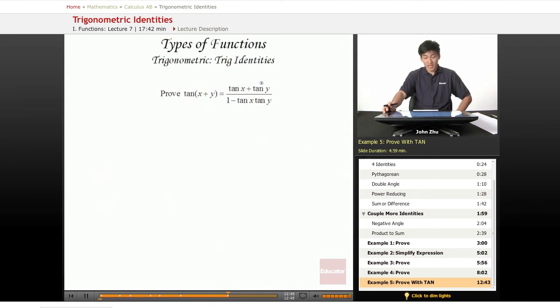Now let's look at a proof with tangents. We're trying to prove that tangent of x plus y equals tangent of x plus tangent of y over 1 minus tangent of x tangent of y, which is sort of like a trig identity in itself.